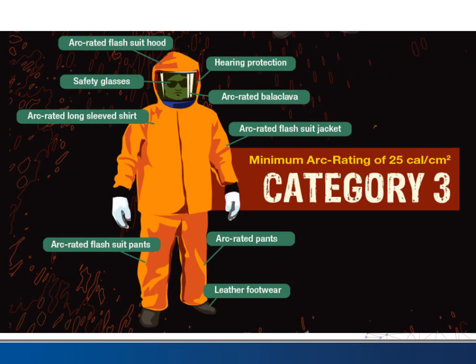Category three is where it starts to get a little more inconvenient. This is between eight and 25 calories per centimeter squared. You'll sometimes hear electricians refer to the 'beekeeper suit' — this is where they have to put it on. It's an arc-rated flash suit with pants and a jacket and a full shield. This is when it starts to kind of impact their ability to work.